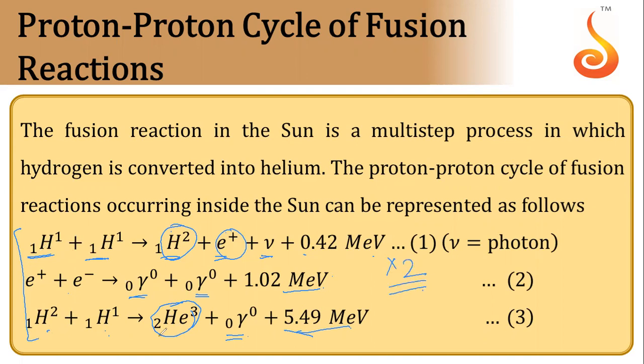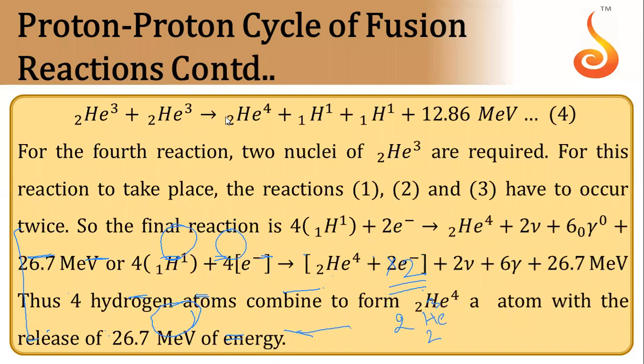Such that two helium-3 nuclei are formed. After that, these two helium-3 nuclei will combine to form a helium-4 nuclei plus two hydrogen nuclei, and 12.86 MeV energy is released.